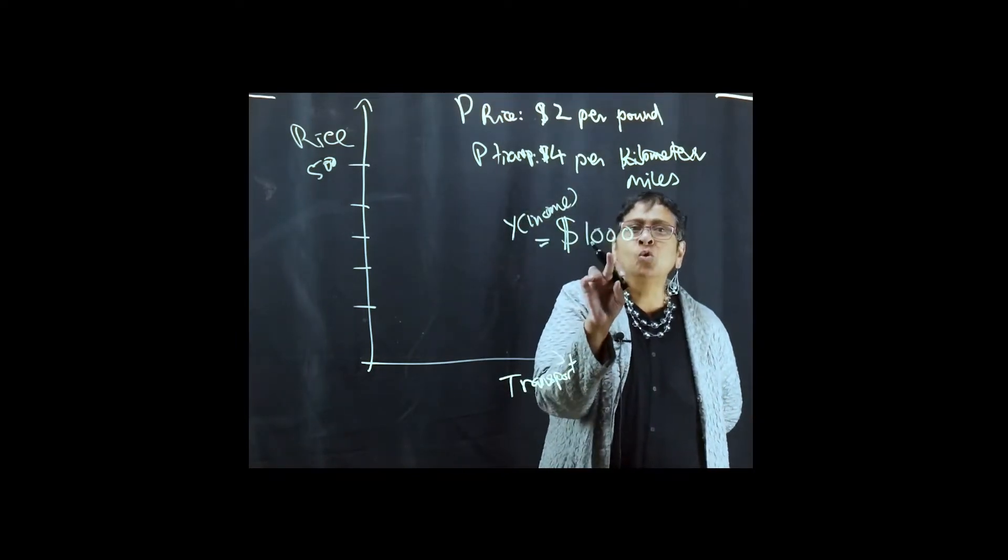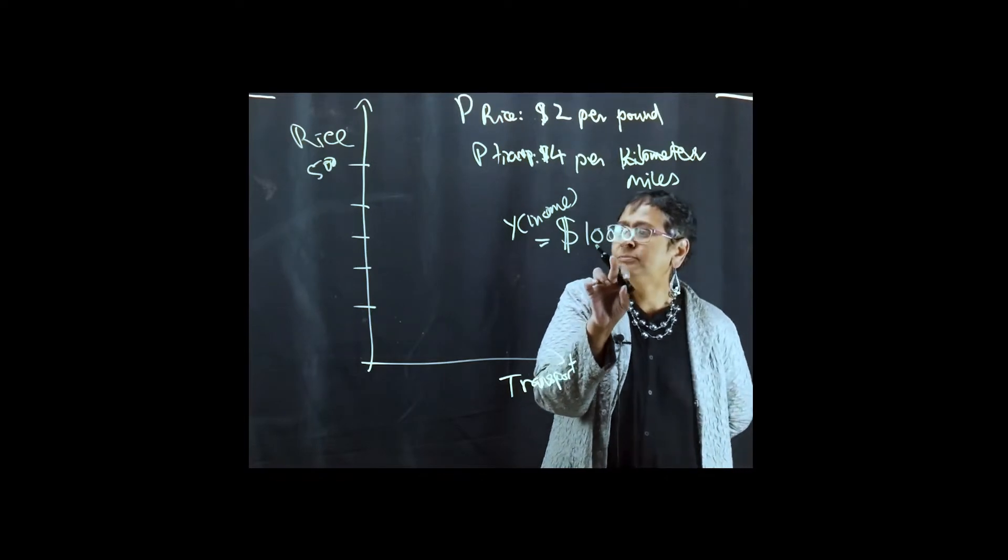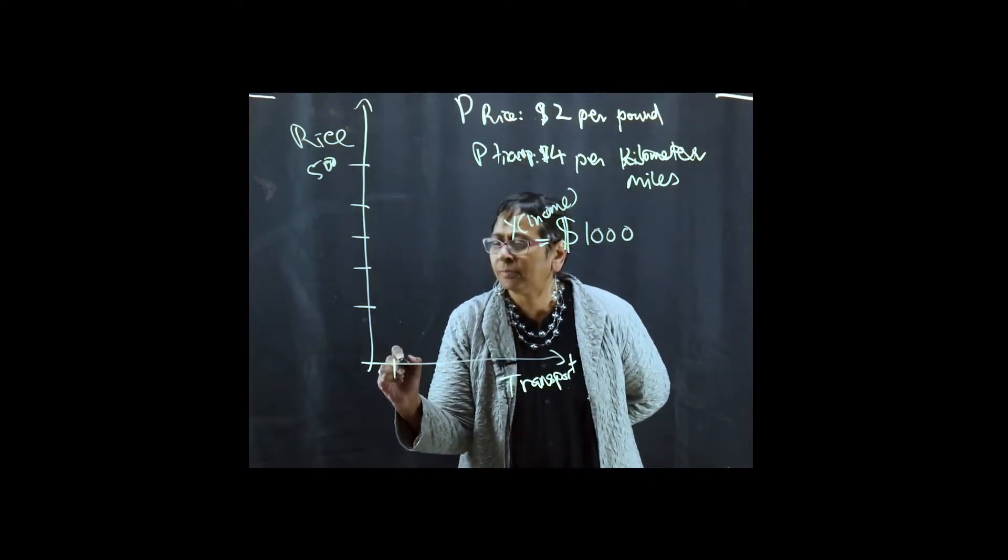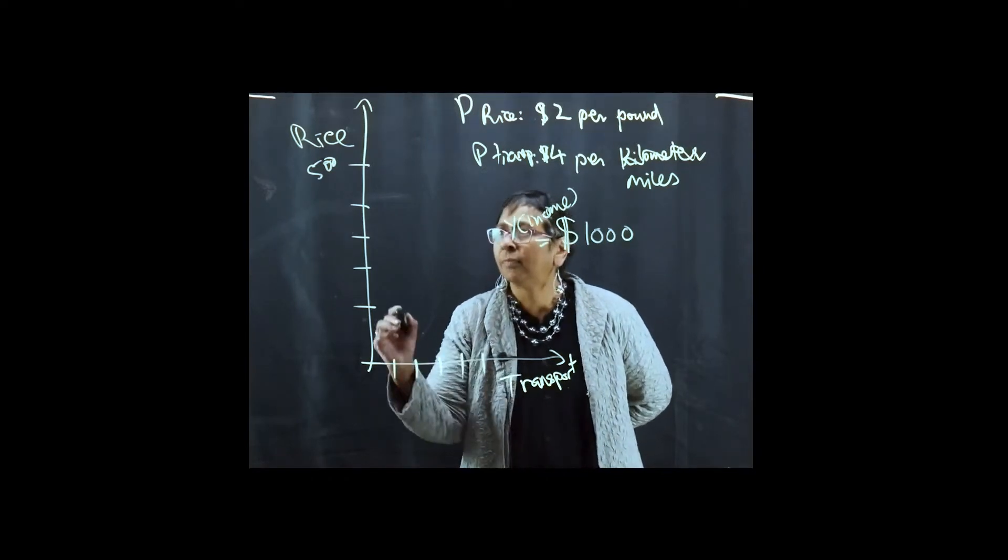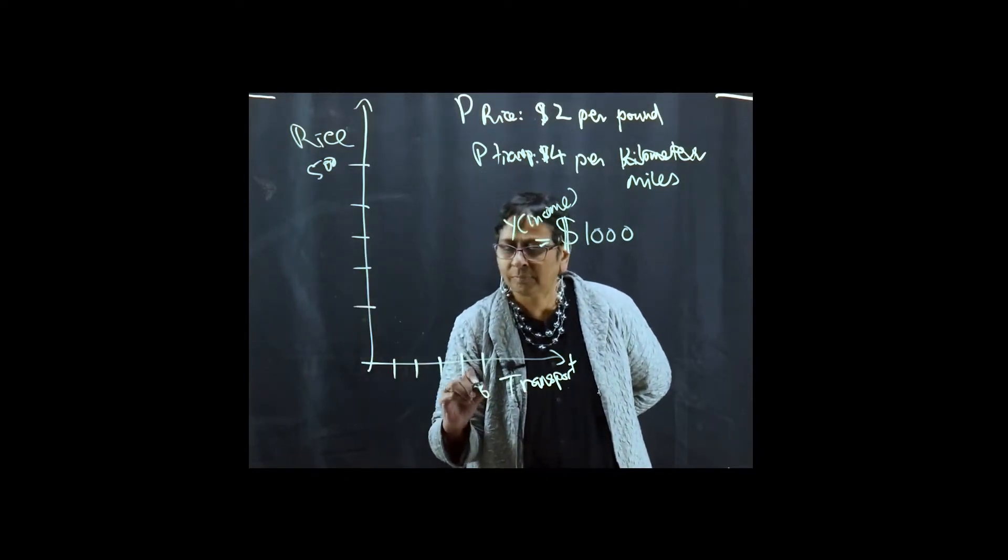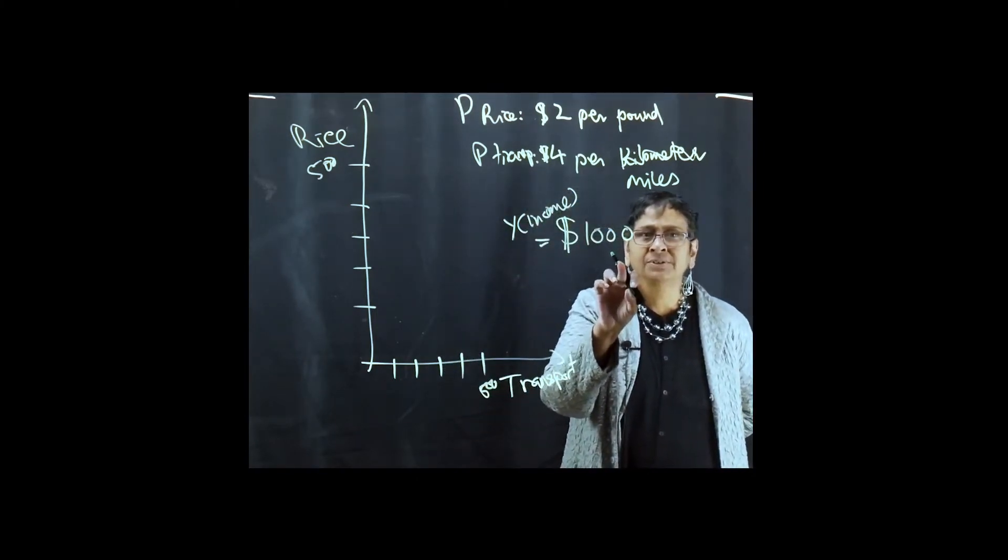Conversely, if I put all my income in transport, the best I can do with an income of $1,000 is 250 miles.